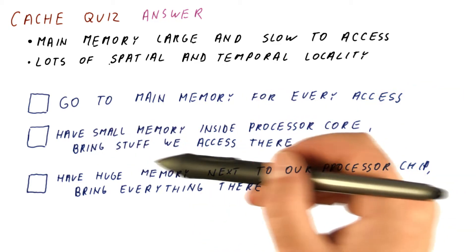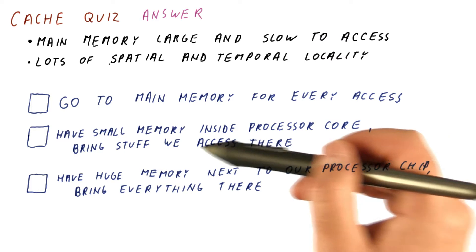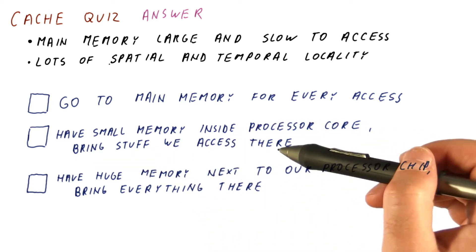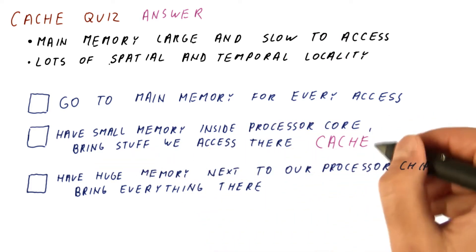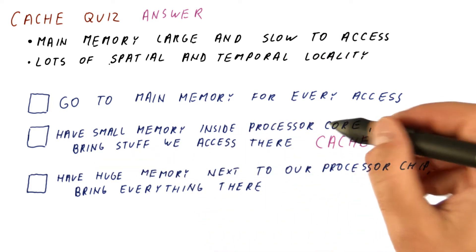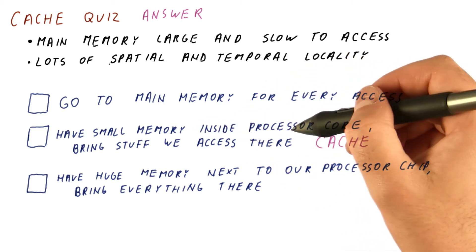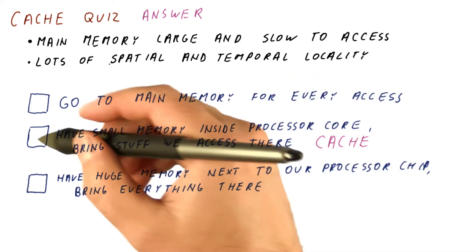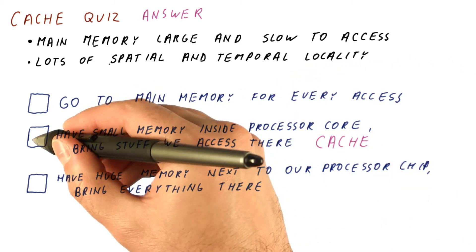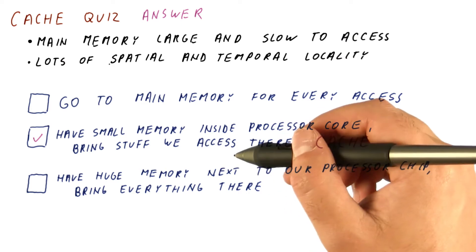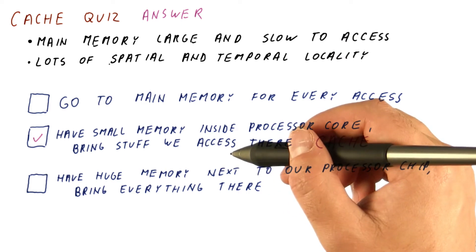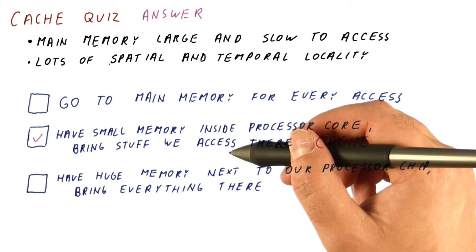Having the small memory inside the processor core and bringing the stuff we access there is the approach of basically caching the memory locations. This is very similar to borrowing the book from the library so that we can use it for a while while we're interested in that topic and then return it.